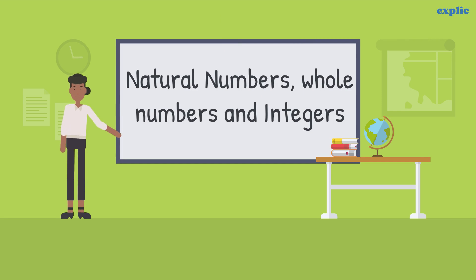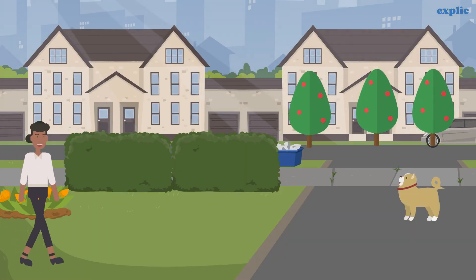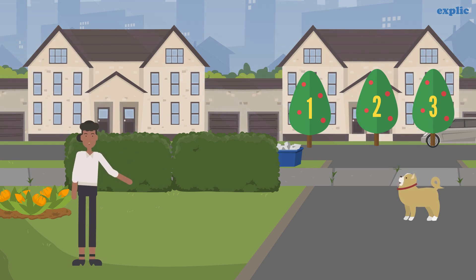Hello class, let's learn about natural numbers, whole numbers and integers. A natural number is a number that can be counted physically. For example, we can count one tree, two trees and three trees. Therefore, all counting numbers are natural numbers.